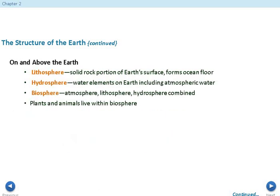On and above the earth we've got the lithosphere. Litho means rock, so the lithosphere is the solid rock portion of the earth's surface, which also forms the ocean floor. We also have the hydrosphere - hydro meaning water, the water elements on earth. Finally we have the biosphere, which is the atmosphere, lithosphere, and hydrosphere combined. Plants and animals live within this biosphere. An animal on land needs to be on the lithosphere, the more solid portion of the earth, but they also need to be near water or the hydrosphere to live and drink. This all comes together and works together.